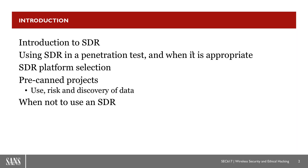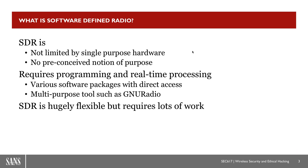We can use some software purpose-built to do a specific function, and then take that same software-defined radio, do a Control-C on our application, and have it do another application — very much unlike our radio in the dash of our car. We can also use a multipurpose tool such as GNU Radio and GNU Radio Companion to build radios out of various blocks in a very similar fashion and have it do all sorts of things. It can require lots of work and lots of moving parts, but there are things out there to get started with.